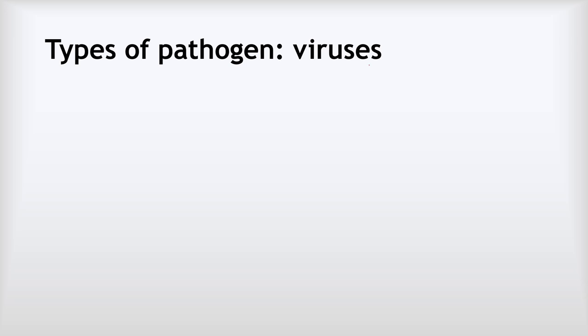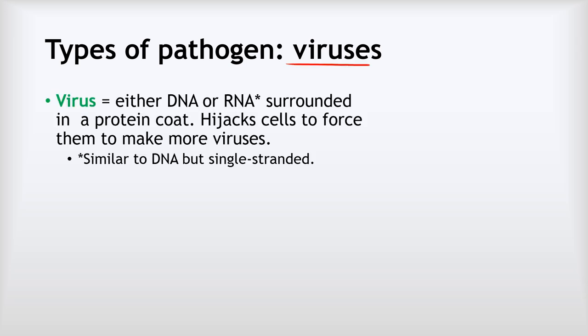Our next kind of pathogen is viruses. Viruses are a little different because they aren't alive in the traditional sense — they don't have a metabolism, they're not respiring or producing proteins, and they don't really do anything until they hijack a cell. A virus is either some DNA or RNA — RNA is essentially similar to DNA but with a single strand rather than a double strand — surrounded by a protein coat. Viruses hijack cells and force them to make more copies, and that process destroys the cell.